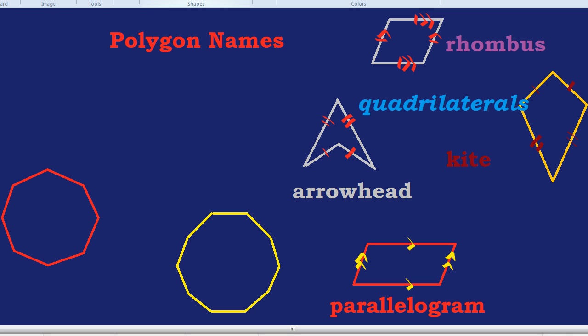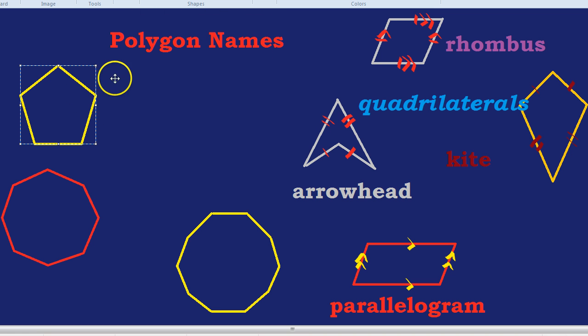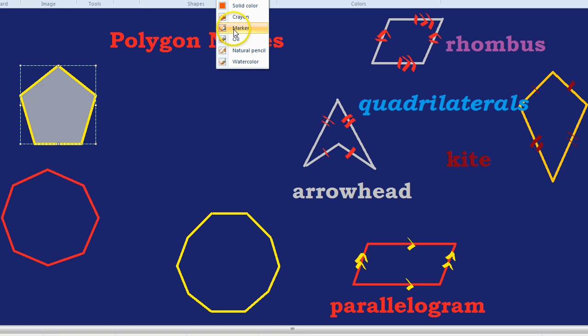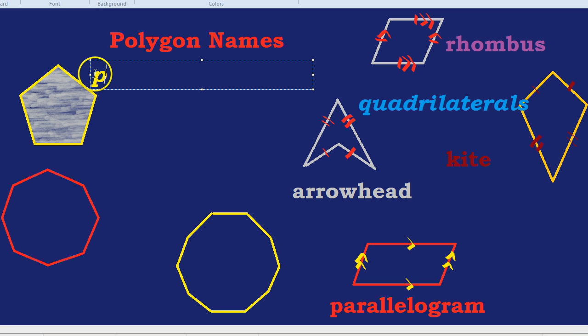The first of these would be a pentagon. As you might know, oh, I didn't want it filled in. There we go. As we might know, oh, we can check out some of these other ones. Look at that. Marker, oil. Oh, that's nice. Let's do oil. No, no, no. Watercolor. That's a pentagon, and it's called a pentagon because it has five sides. So a shape with five sides is a pentagon.